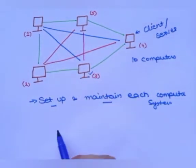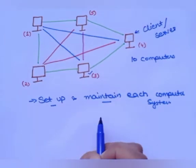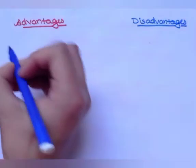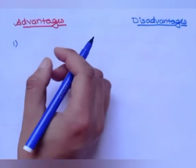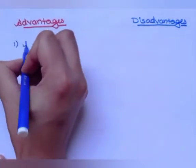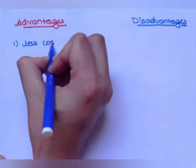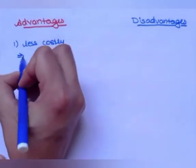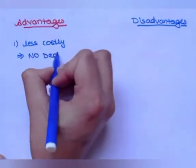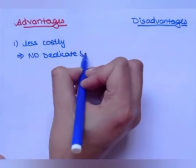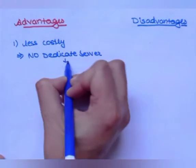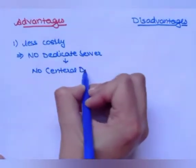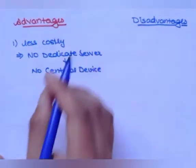Now we will discuss some advantages and disadvantages of using peer-to-peer computer network. The first advantage is that it is less costly, as it does not contain any dedicated server and there is no central device available in the peer-to-peer network.